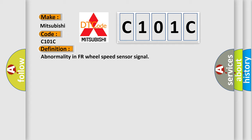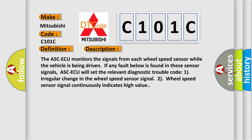And now this is a short description of this DTC code. The ASC-ECU monitors the signals from each wheel speed sensor while the vehicle is being driven. If any fault below is found in these sensor signals, ASC-ECU will set the relevant Diagnostic Trouble Code: 1. Irregular change in the wheel speed sensor signal. 2. Wheel speed sensor signal continuously indicates high value.